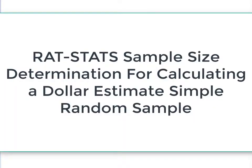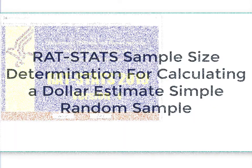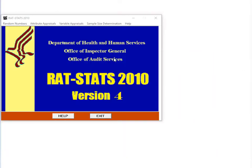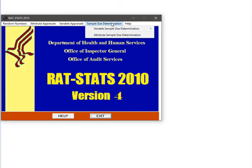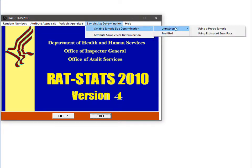This is the third in a series of lessons about how to use RATSTAT software. In today's lesson we will learn about sample size determination for estimating overpayment amounts from a simple random sample. RATSTAT provides two modules for determining the sample size in these situations.